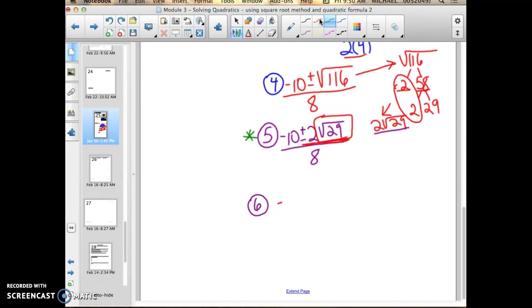And my expression in step 5 have 3 whole numbers: a negative 10, a 2, and an 8. They are all even. So I know that they can all be reduced by a factor of 2. So I can divide all of these numbers by 2. Negative 10 divided by 2 is a negative 5. Plus or minus 2 divided by 2 is 1. The square root of 29 can't be simplified any further. And this is all over 8 divided by 2 is 4.